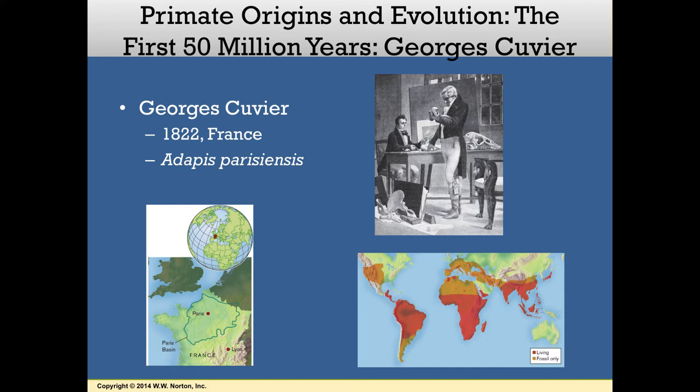Fortunately, Cuvier provided a thorough anatomical description of the specimen, setting the foundation for future descriptions that allow researchers all over the world to understand the anatomy of these fossils. And since that discovery, literally tens of thousands of primate fossils have been unearthed in regions all over the world, giving us great insight into the evolutionary history of our own mammalian lineage.